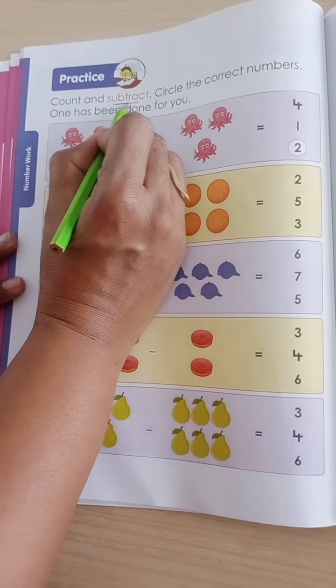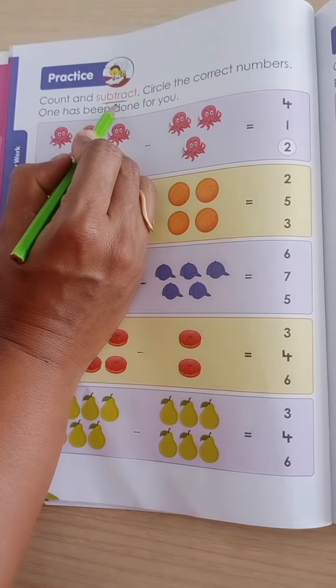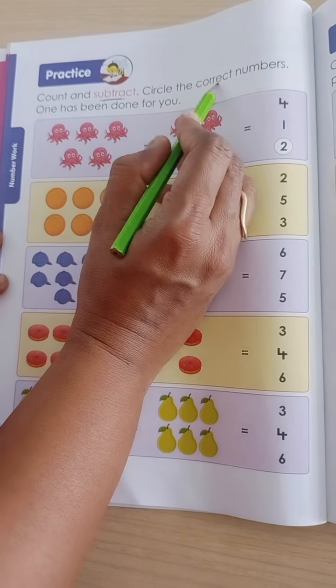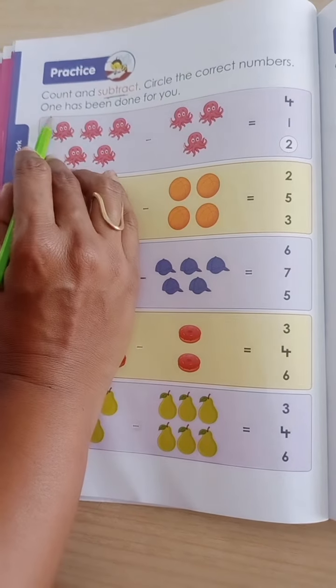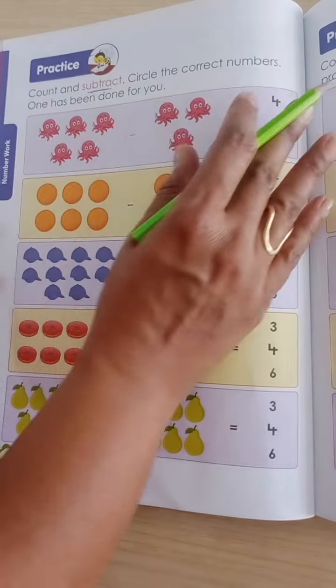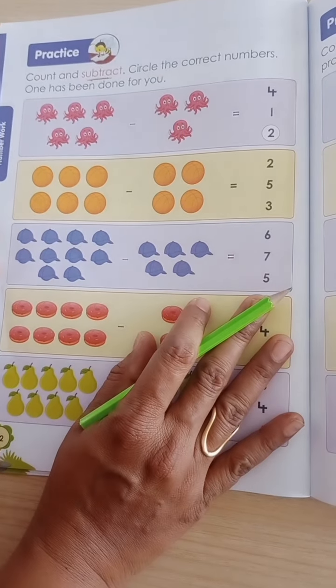We are going to do subtraction. Count and subtract, circle the correct numbers. One has been done for you. Now we have to do subtraction here.